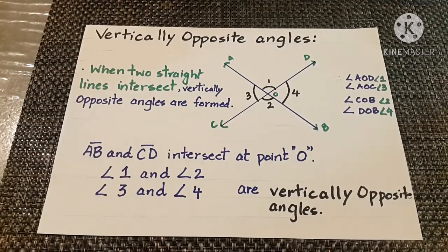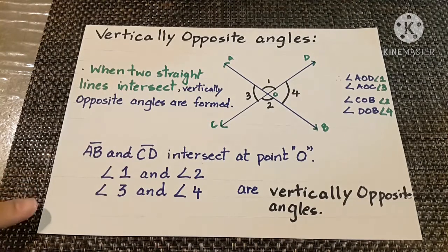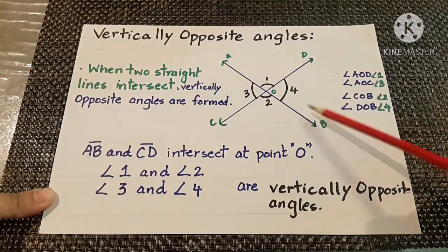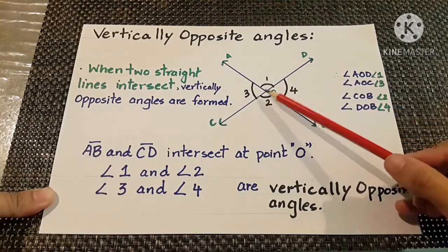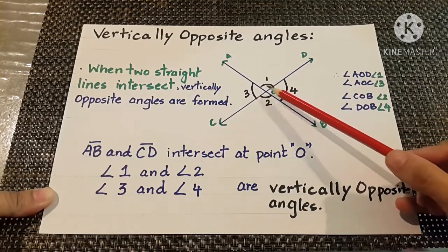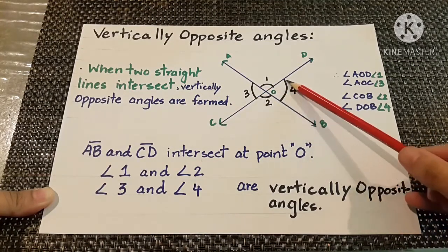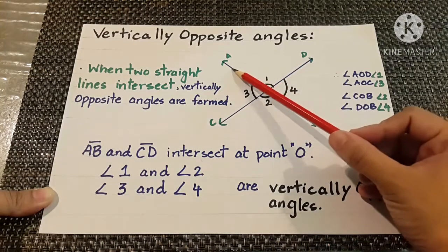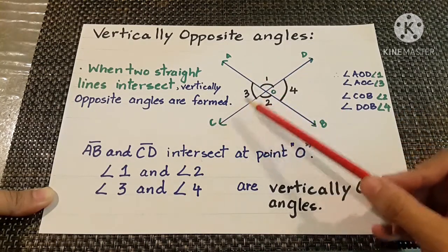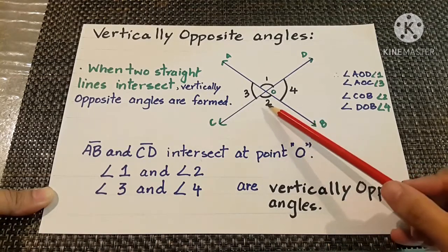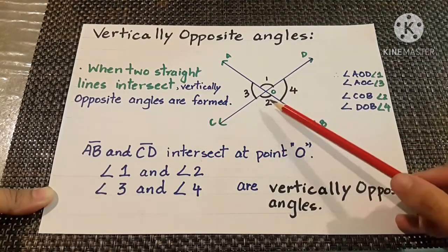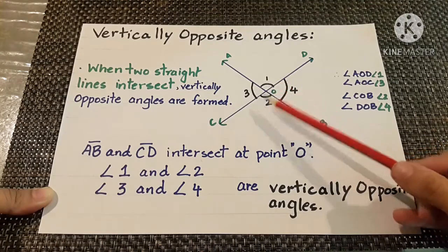Vertically opposite angles: when two straight lines intersect, vertically opposite angles are formed. Line AB and line CD are intersected at point O. The angles formed are angle 1, angle 2, angle 3, and angle 4, or: AOD is angle 1, AOC is angle 3, COD is angle 2, and DOB is angle 4. In this way angles are formed.